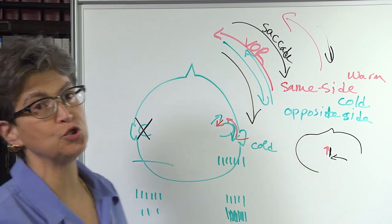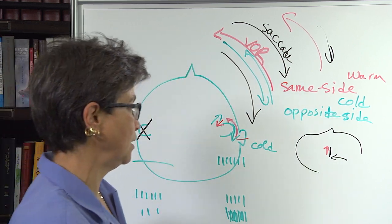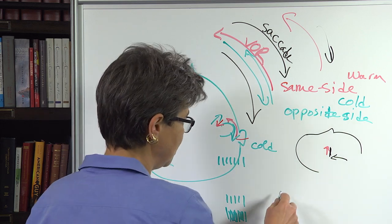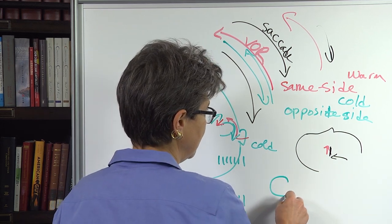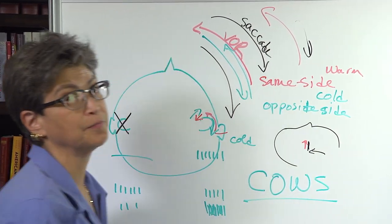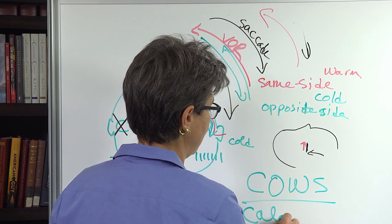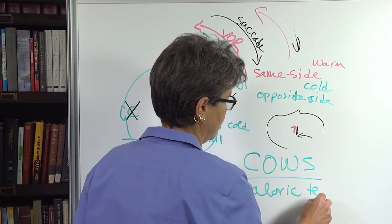And this gives rise to, in my opinion, the best mnemonic in neurobiology, which is: cold, opposite, warm, same, COWS. And this is the way to understand how caloric testing works.